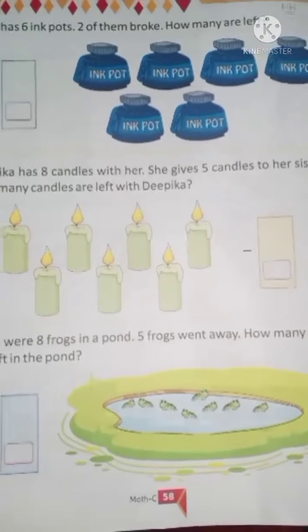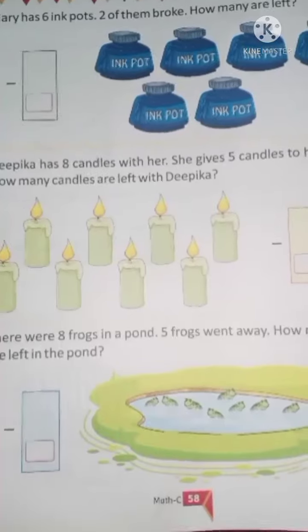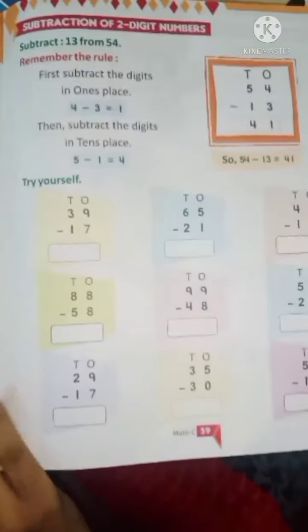So, dear kids. Same like this. You have to solve remaining 3 problems. Remaining 3 story sums in your book only. Now, come to the next page. That is subtraction of 2 digit number.